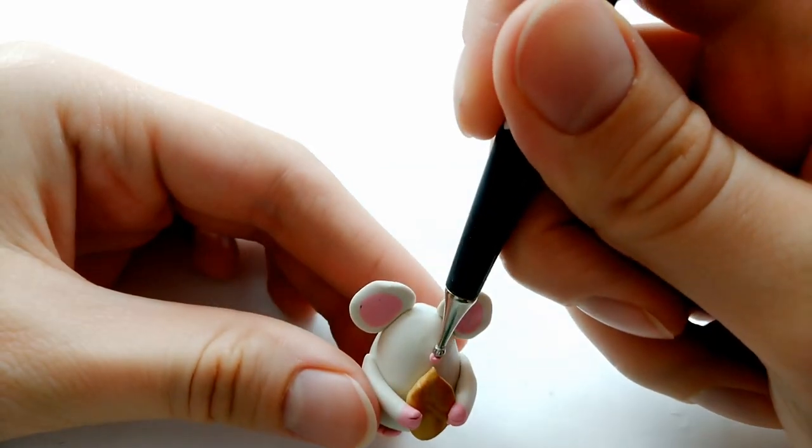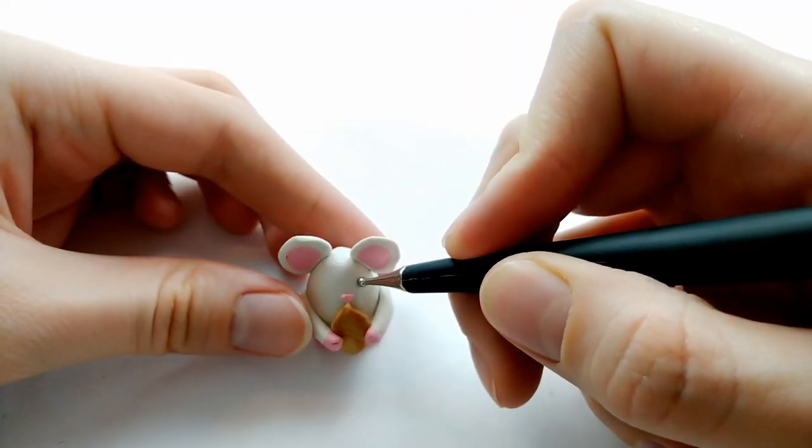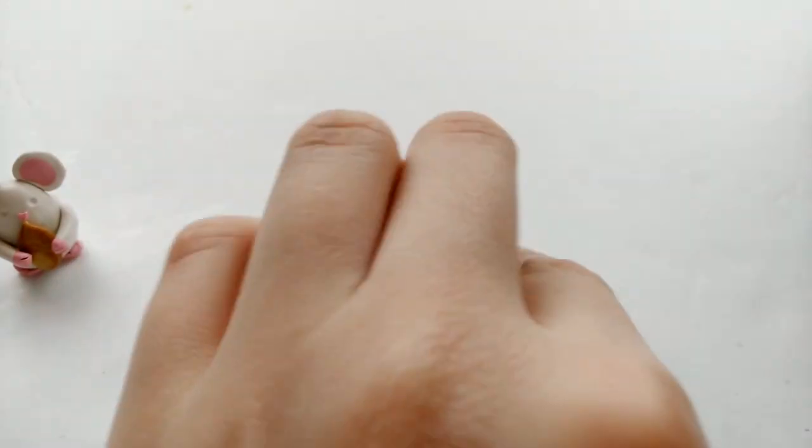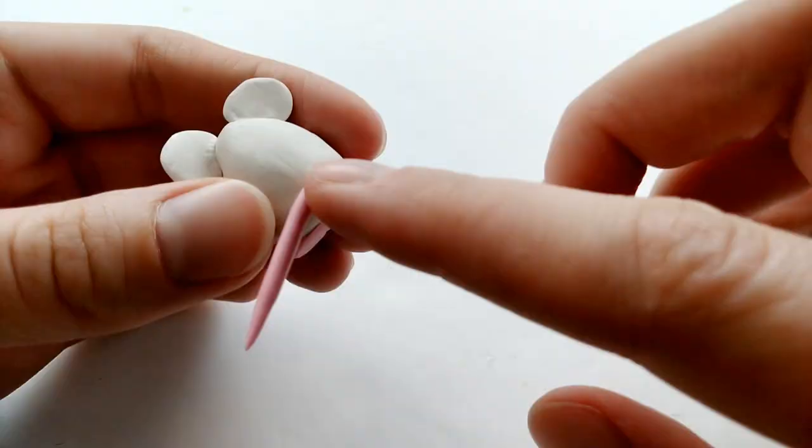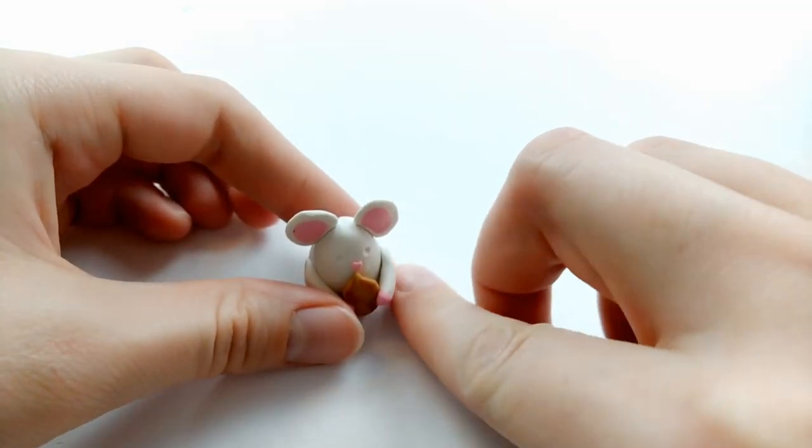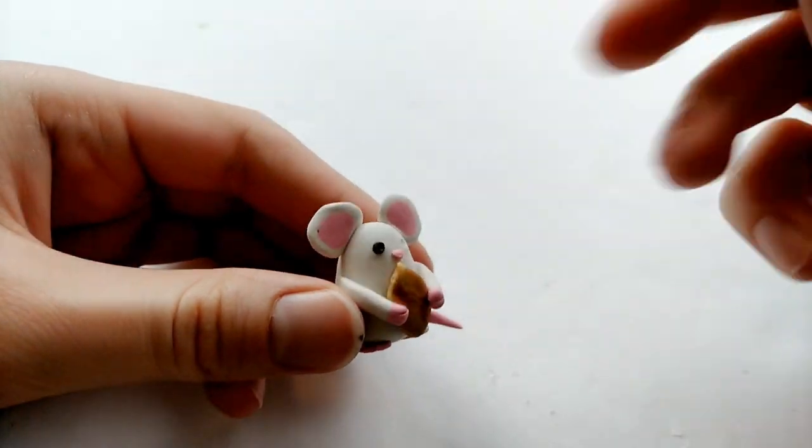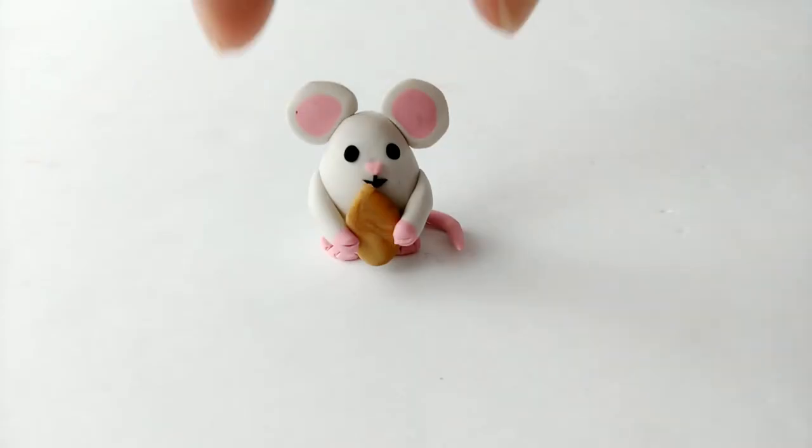And a little pink nose. Then with a ballpoint tool, we're just going to make indents for the eyes. Then with a ball of pink clay, we're going to roll that out into a tapered log and attach it to the back of the mouse and that'll be its tail. Then we're just going to take some black clay and roll it into small balls for the eyes and add a little mouth detail as well. And that's our finished mouse and this is after baking.